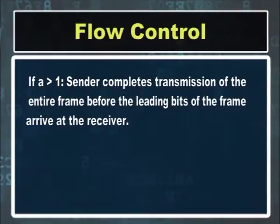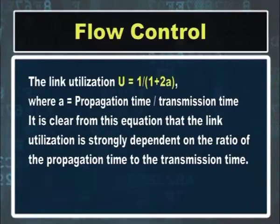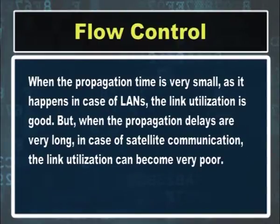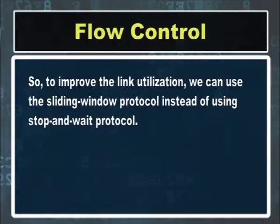The link utilization U equals 1 / (1 + 2a), where a equals propagation time divided by transmission time. It is clear that link utilization is strongly dependent on the ratio of propagation time to transmission time. When propagation time is very small, as in LANs, the link utilization is good. But when propagation delays are very long, as in satellite communication, link utilization can become very poor. To improve link utilization we can use the sliding window protocol instead of stop and wait.